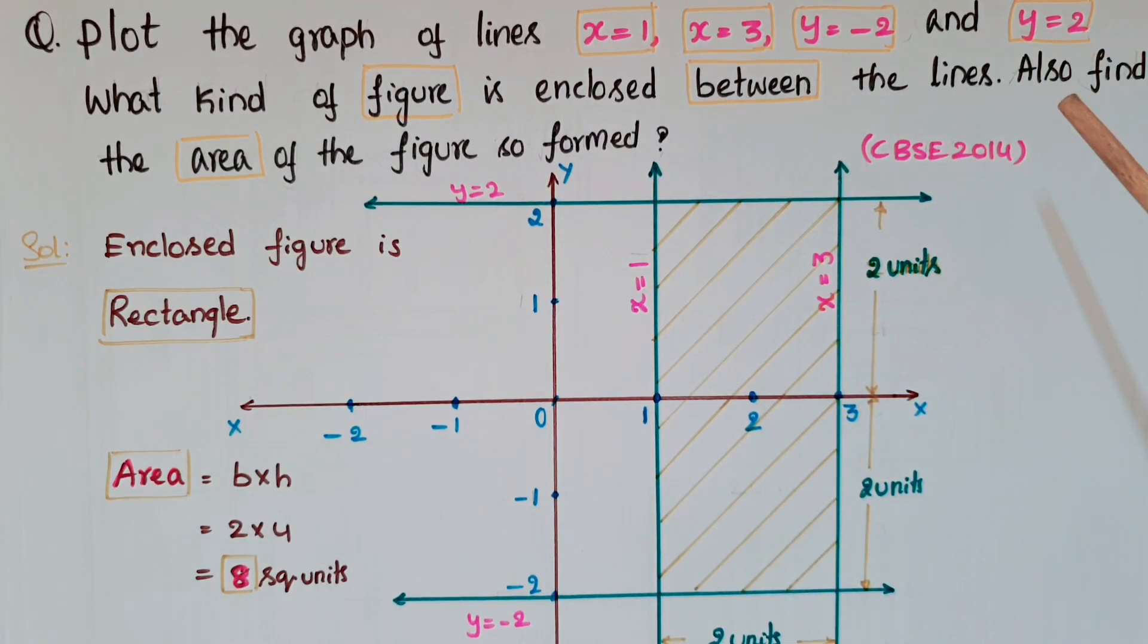This question was asked in CBSE 2014. Plot the graph of lines x=1, x=3, y=-2, and y=2. What kind of figure is enclosed between the lines? Also find the area of the figure so formed.